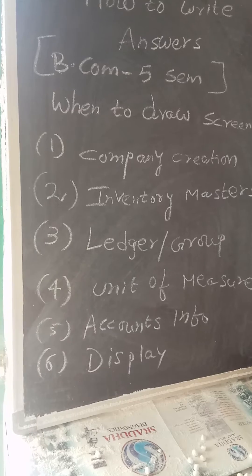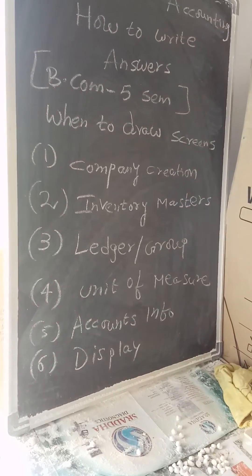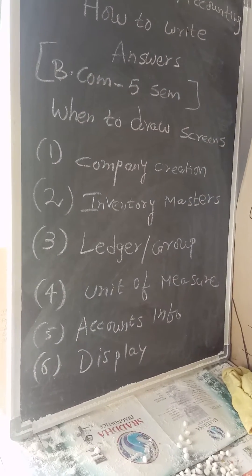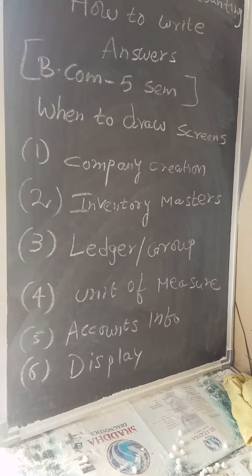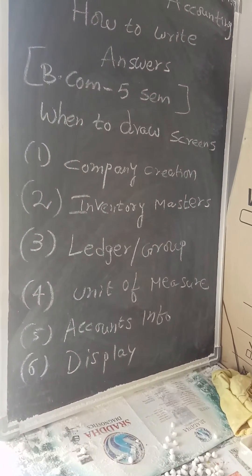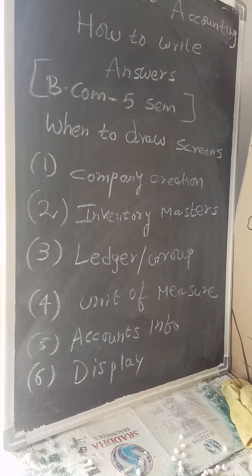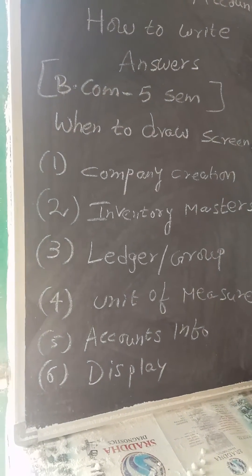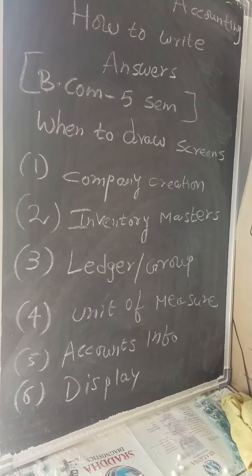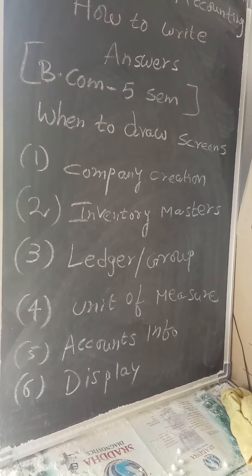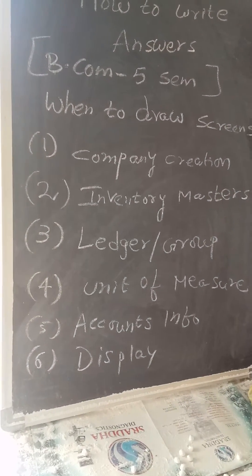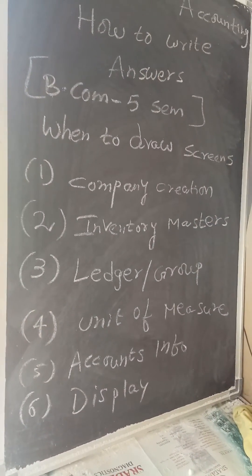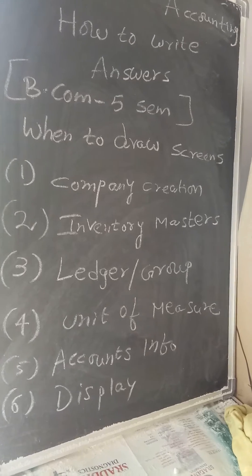Then Ledger - try to give the definition of ledger. Ledger is a set of accounts of personal accounts, real accounts, and nominal accounts. All the information related to one particular item will be shown at one place. Then Group - the similar kind of ledgers at one place is known as a group. You have to write about predefined groups in Tally, primary groups and subgroups.